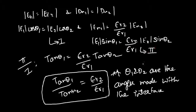In IES and PSU examinations, questions sometimes give angles made with the normal to the interface rather than with the interface itself, but still use the notation θ1 and θ2. Don't be misled by the notation — check whether the angles are measured from the interface or from the normal to the interface, and adjust the equation accordingly.